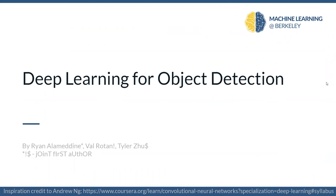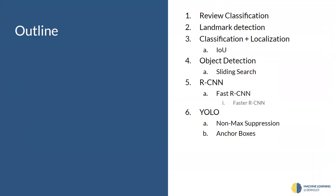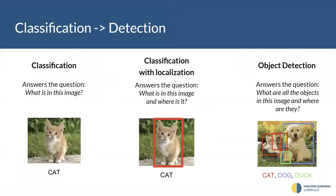Today we're going to be talking about deep learning for object detection — stepping a little bit more into the cool stuff we can do with computer vision. I'll get into what that means in a second.